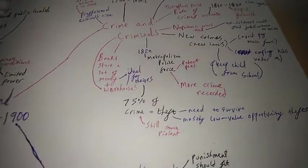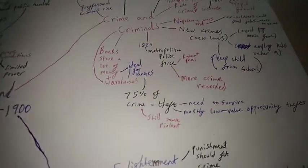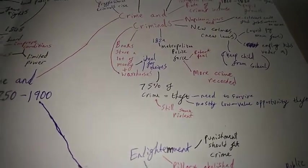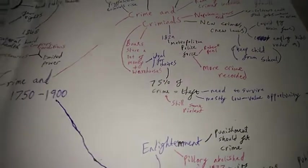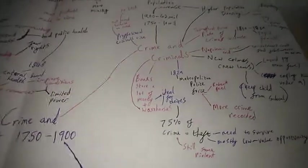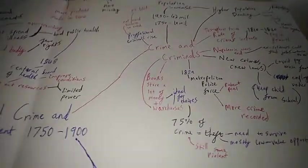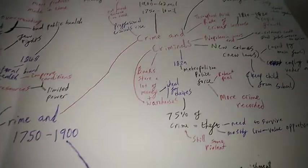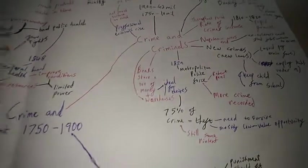In 1829 was the setting up of the Metropolitan Police Force which was in London and created by Robert Peel. Due to this more crime was recorded. Also banks and warehouses became created and as we know they store a lot of money and valuable goods which made them ideal for thieves.